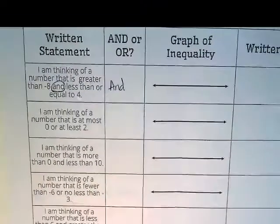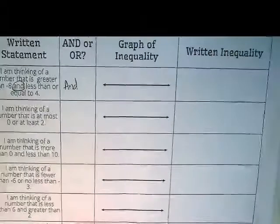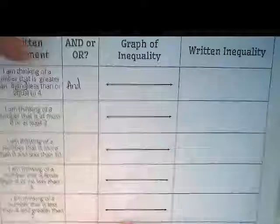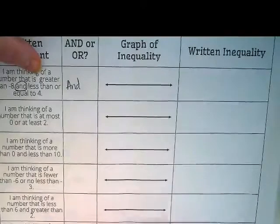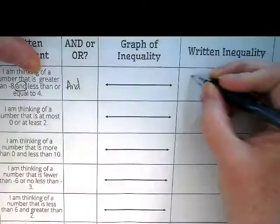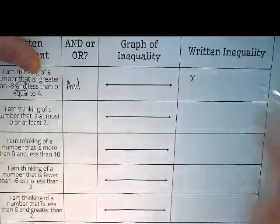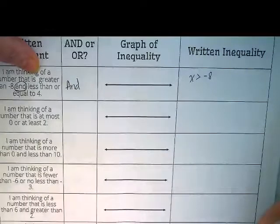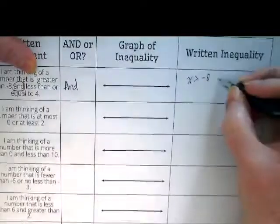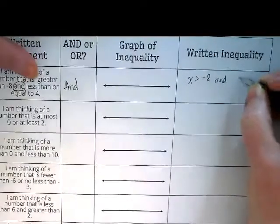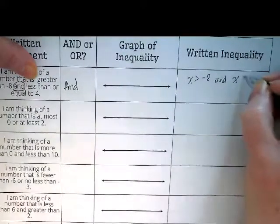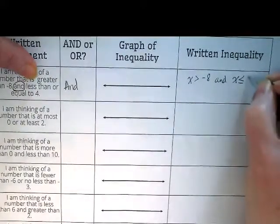We want to write our inequality. Let me zoom out a little bit so we can see it. A number that is greater than negative 8. So we would write that as x is greater than negative 8. And x, that's the number, is less than or equal to 4.